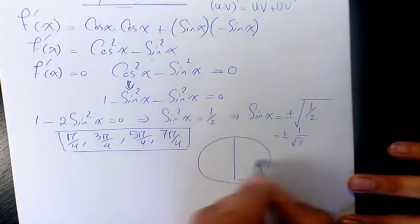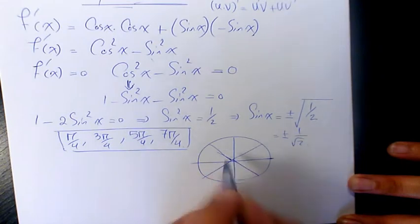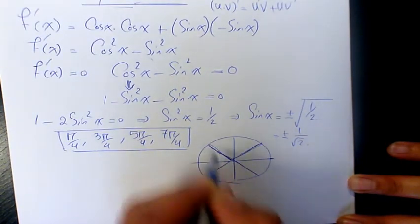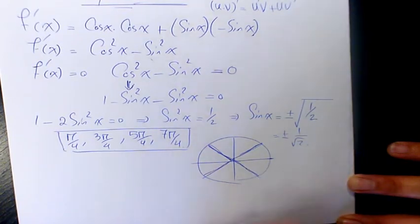We can mark where f'(x) = 0 on a number line: π/4, 3π/4, 5π/4, and 7π/4. So we have all four critical points.